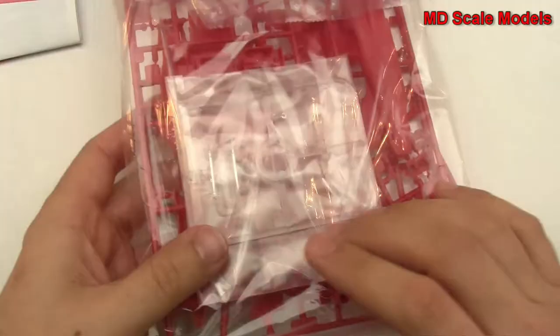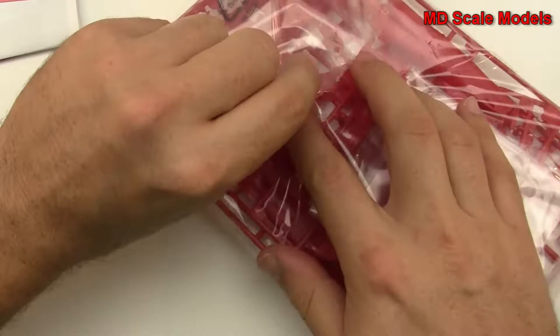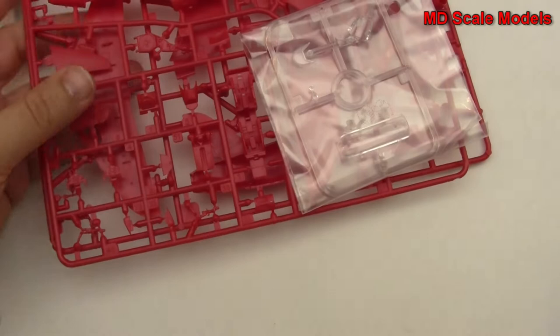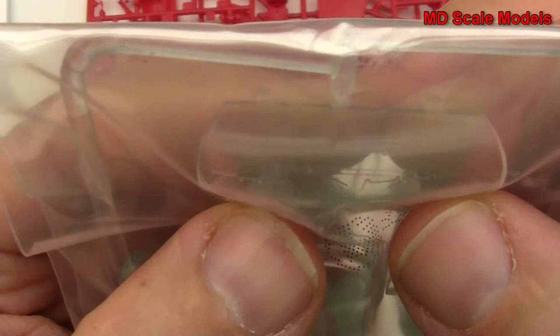So let's open up our sprues and have a look. We've got our glass here, canopy, with some very nice details here. You can see the ejection explosives inside there. Here's our windshield, so it's very nicely molded.